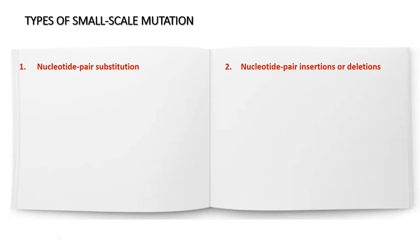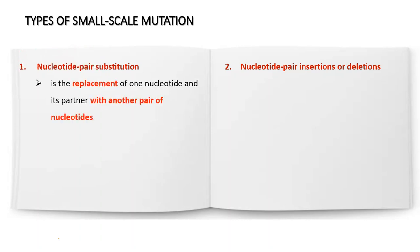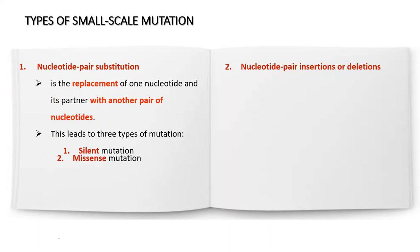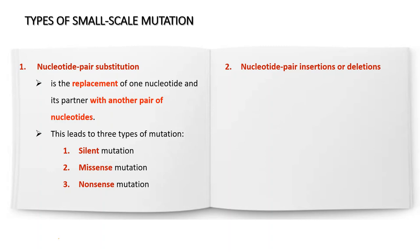Nucleotide pair substitution involves the replacement of one nucleotide and its partner with another pair of nucleotides. This leads to three types of mutation: silent mutation, missense mutation, and nonsense mutation. The second type of small-scale mutation — nucleotide pair insertions or deletions — involves the addition or loss of nucleotide pairs in a gene.